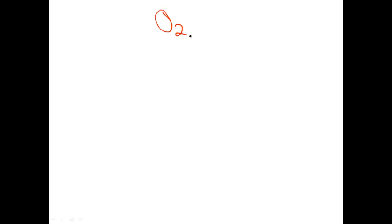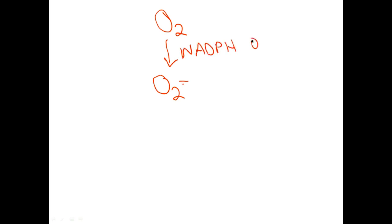The mechanism by which killing occurs is oxygen-dependent, so we obviously start with oxygen. One of the very first reactions is that oxygen is going to be converted to superoxide. The enzyme that does this is NADPH oxidase — that's the first step. NADPH oxidase will take oxygen and convert it to superoxide.